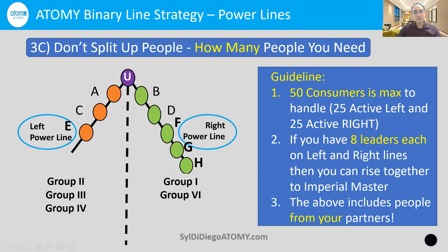These 50 consumers and eight leaders include people from some of your partners. If you have one or two partners on your left and right, and everybody brings in 15 people, you've got 45 consumers right there — that's the power of synergy with Atomy. You want to keep these principles because you're not going after quantity but quality — people who love the products and shift their shopping to Atomy. Eventually, some of those consumers will be excited to make cash back, then later residual income, especially as their economic situation changes.